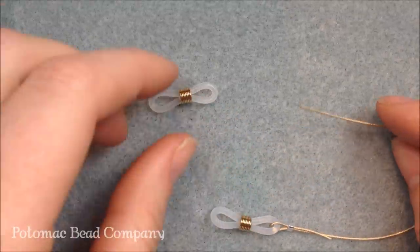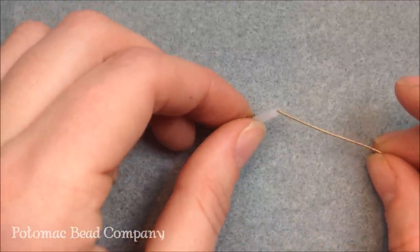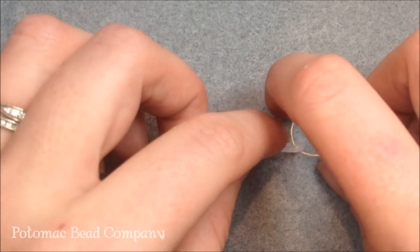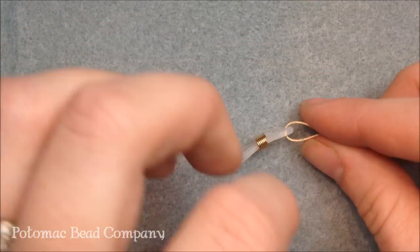When you get to the other side, you do the exact same thing that you're going to put on a crimp bead, put the wire through the plastic, and then back through the crimp bead, and squash it down.